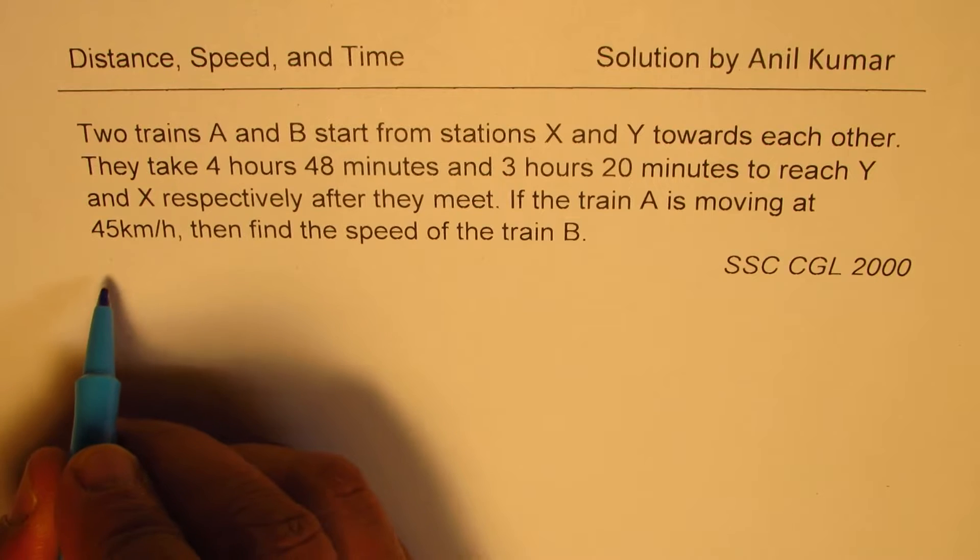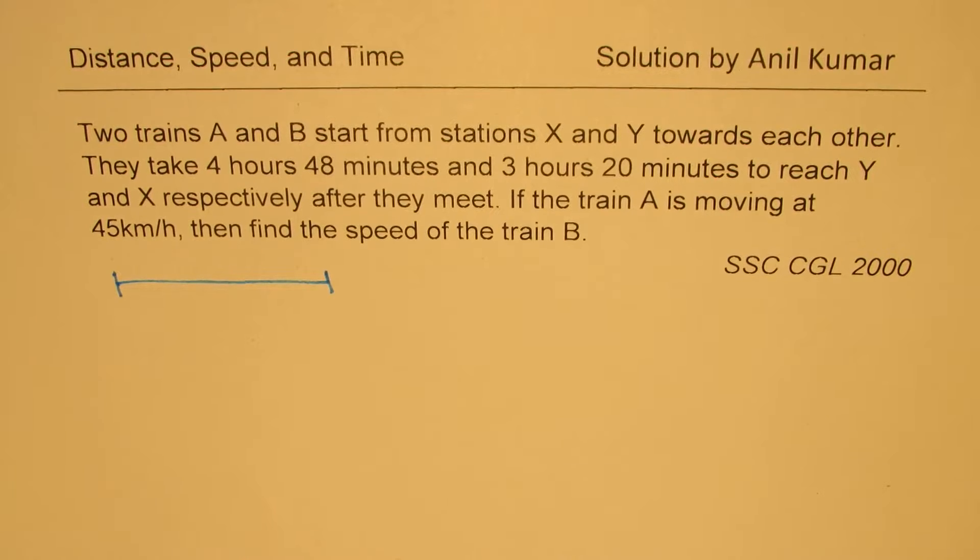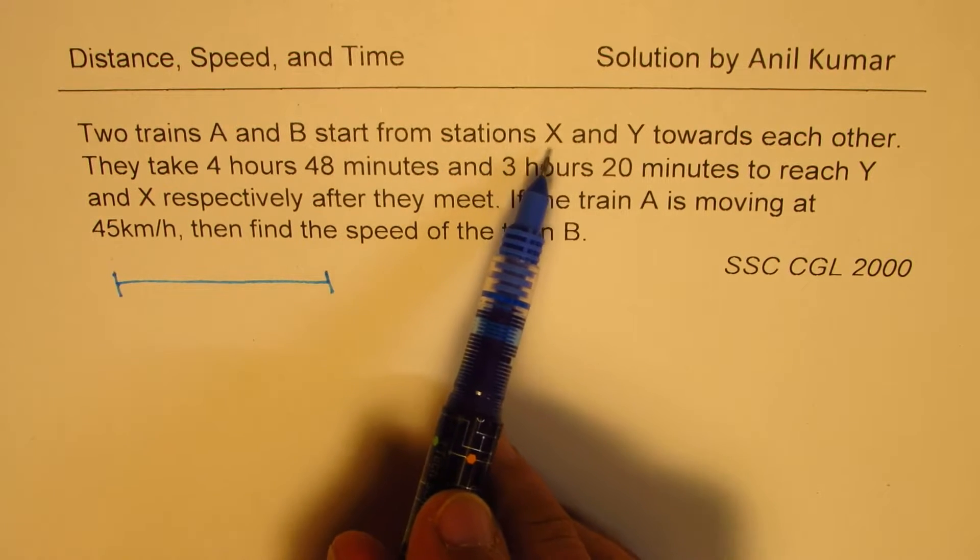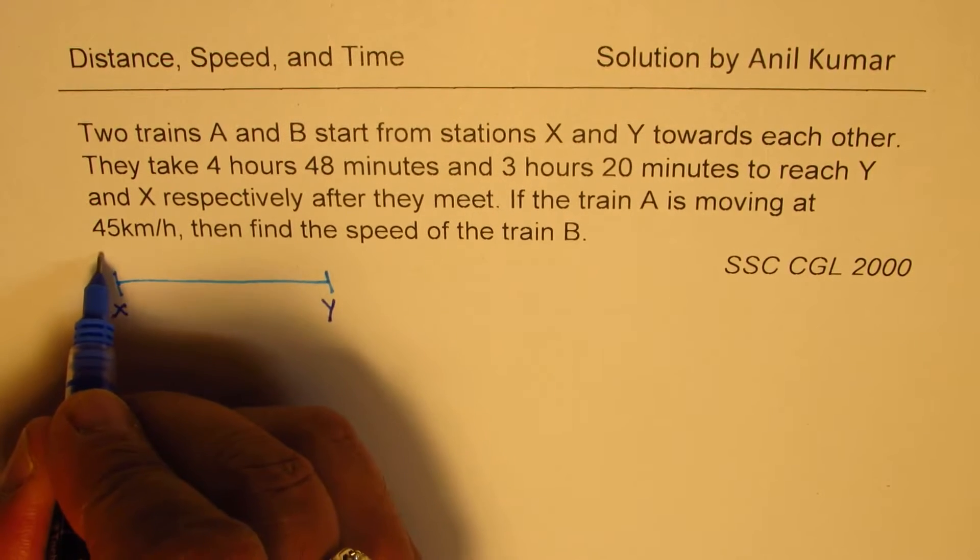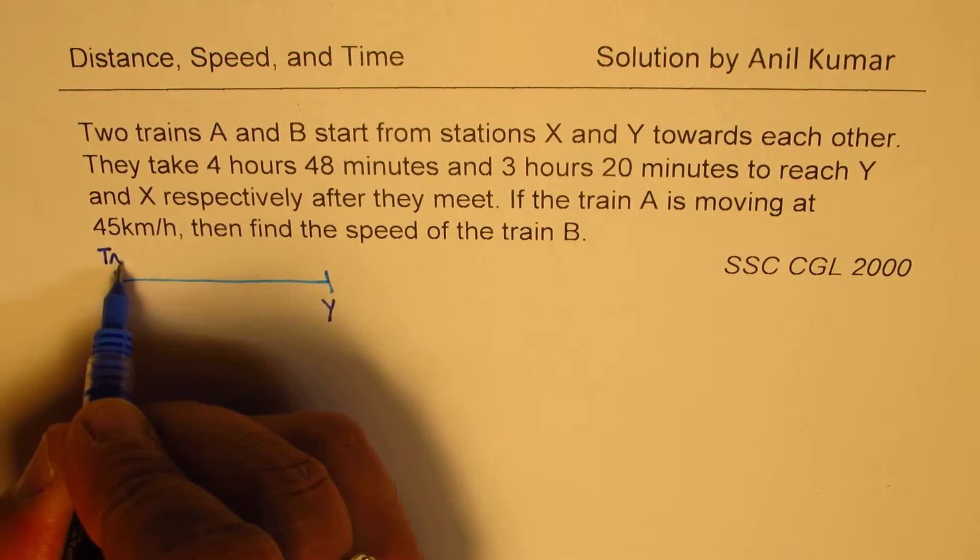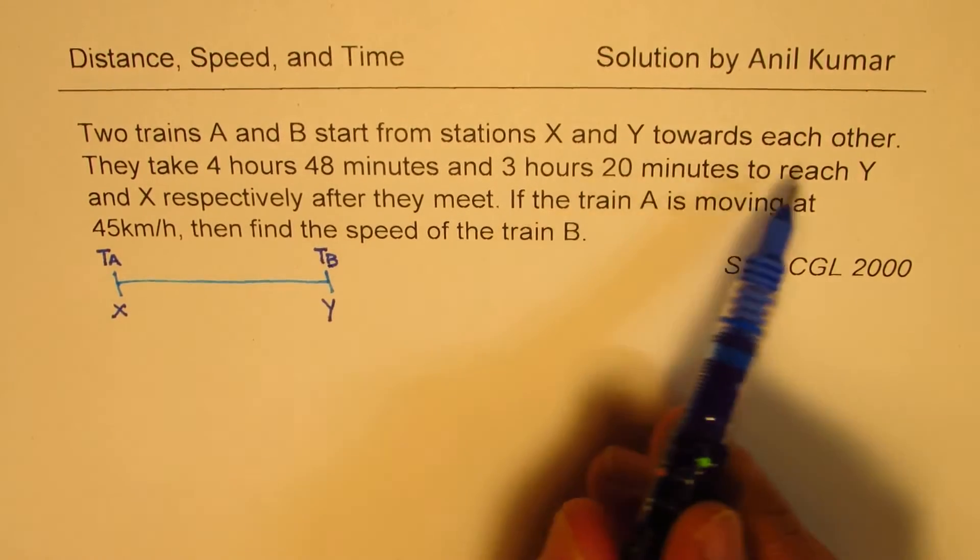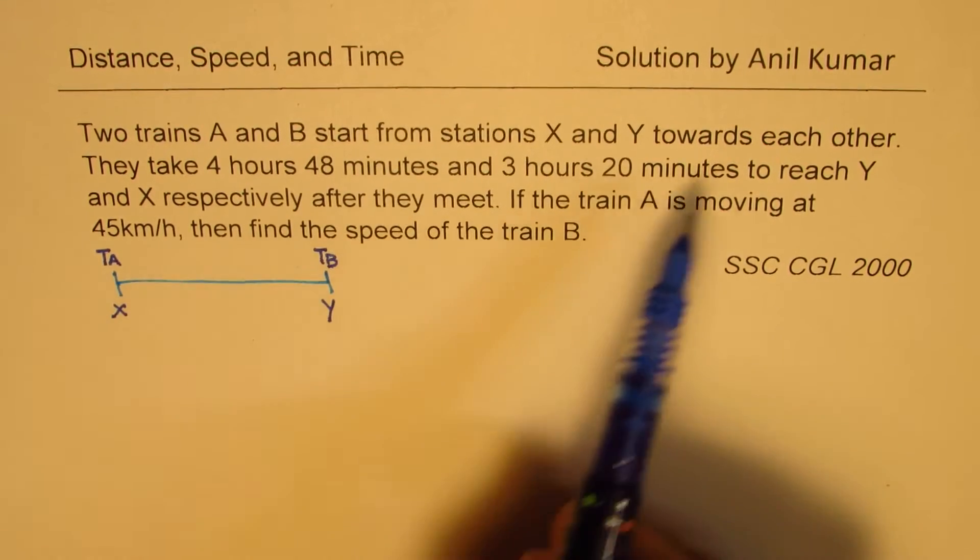Let's first try to understand the scenario. We have two stations here. It's given that two trains A and B start from stations X and Y. So this is station X, that is station Y. Here is train A, and here is train B. They are moving towards each other.